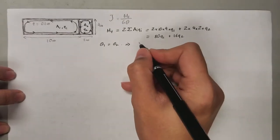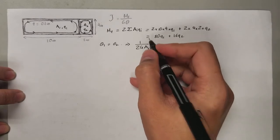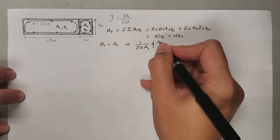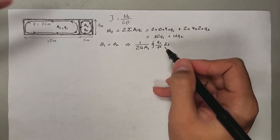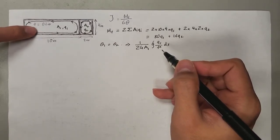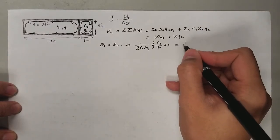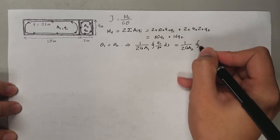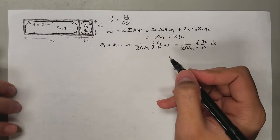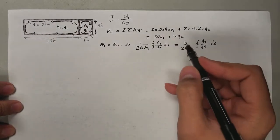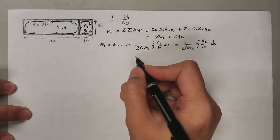From that condition, the formula for twist per unit length in a multi-cell section is 1 over (2·G·Ai) times the closed-line integral of the shear flow over thickness. Also note that our beam has a uniform thickness of t = 0.1 inches. Because both cells share the same shear modulus G and thickness t, we can simplify the compatibility equation accordingly.